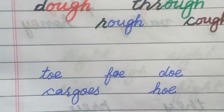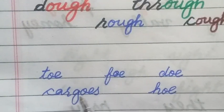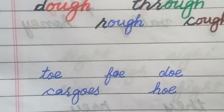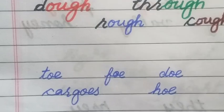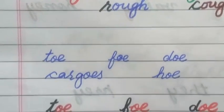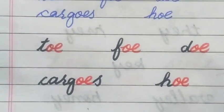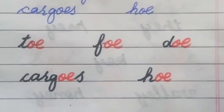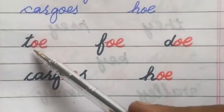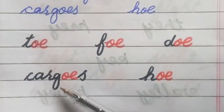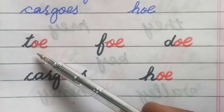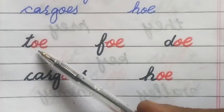Dear students, now I have written five words for you: T-O, F-O, D-O, C-A-R-G-O, S-H-O. You will guess what is common in these five words. I think that you have guessed. The phonogram O-E is common in all these five words, and this phonogram has only a single sound — the O sound.